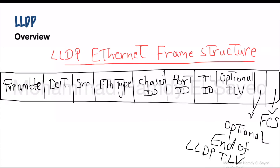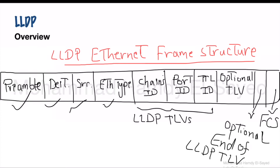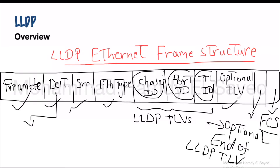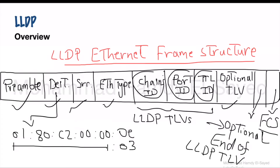This is the frame structure of LLDP. It consists of a preamble — the start of frame to synchronize with the receiver — and it has the destination MAC address, source MAC address, ether type, and it has LLDP TLVs to send the information to peers, optional end-of-LLDP TLV, and finally the FCS or frame check sequence to check for errors. The destination MAC address is a multicast MAC address — a special multicast MAC address not to be forwarded, just used to receive the LLDP message.